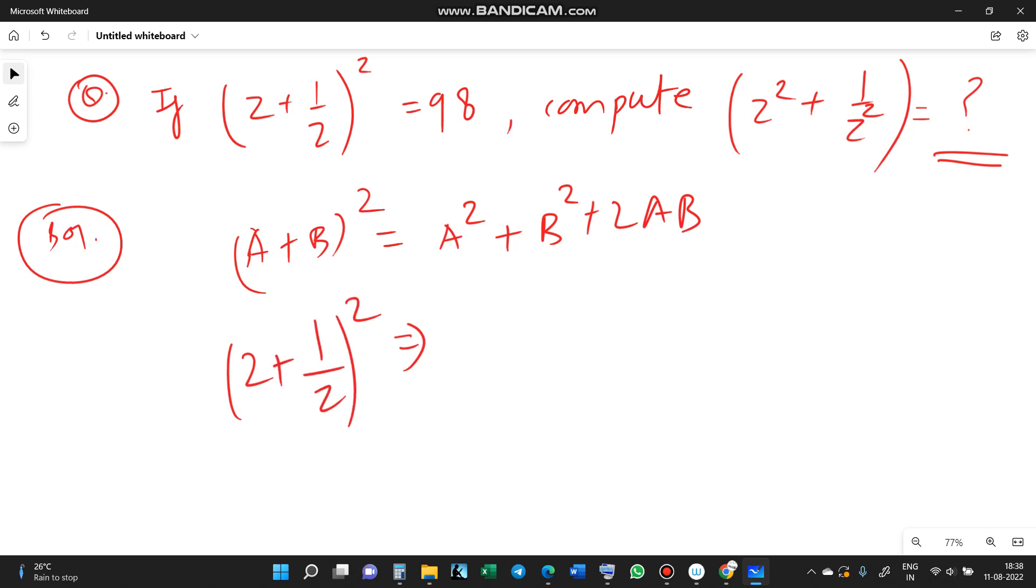Then here Z plus 1 by Z whole square: Z square plus 1 by Z square plus 2 into Z into 1 by Z. This Z becomes cut, only two becomes.